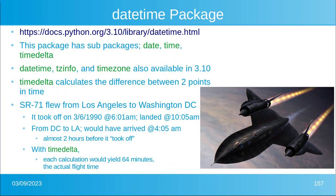The SR-71 flew from Los Angeles to Washington DC in 1990, setting a world record. It took off at 6:01 AM and landed at 10 AM. If it had flown from DC to LA, it would have taken off at 6:01 AM and arrived at 4 AM — almost two hours before it took off. However, using `timedelta` from the `datetime` package, the calculation yields 64 minutes — the actual flight time to fly across the entire country. Still a record set in 1990. Have fun with time and timers — that was the end of part 13, and I'll see you in part 14.